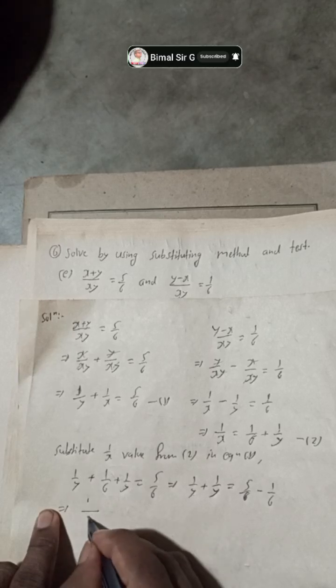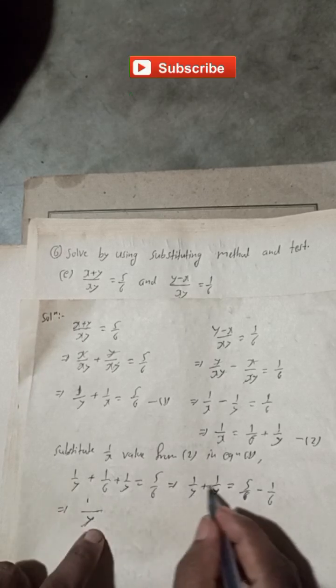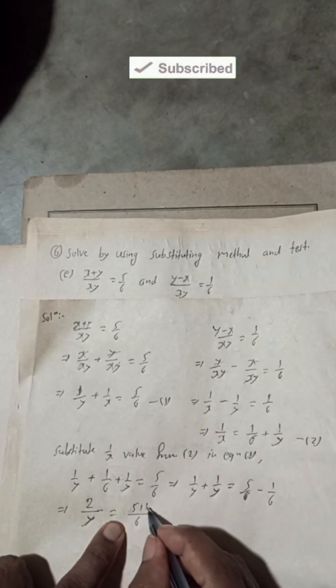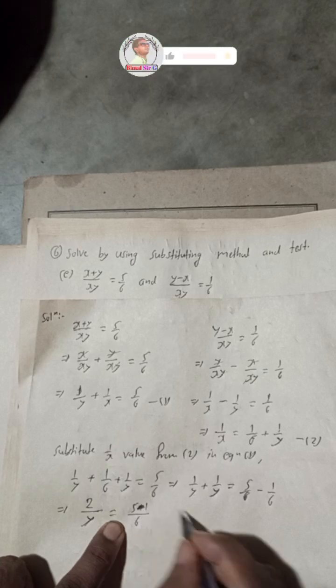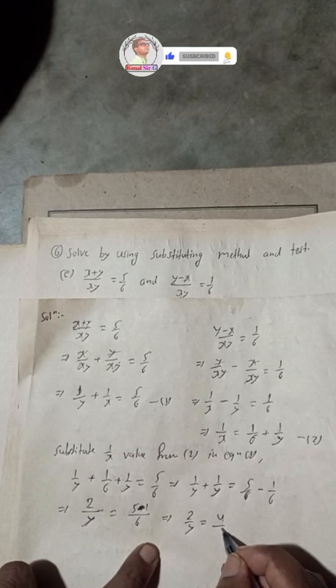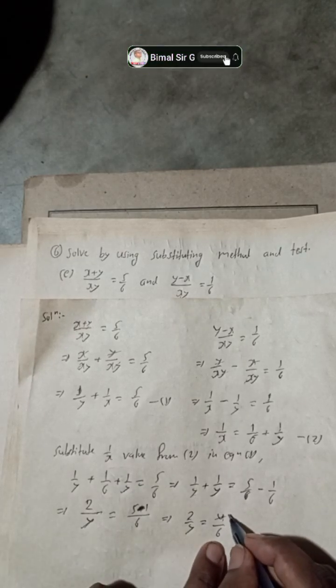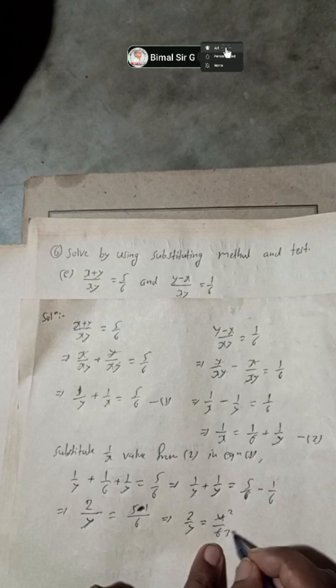Combining the left side: 2/y. On the right side, same denominator 6, so 5 - 1 = 4, giving 4/6. So 2/y = 4/6. Simplifying by dividing both numerator and denominator by 2: 2/y = 2/3.